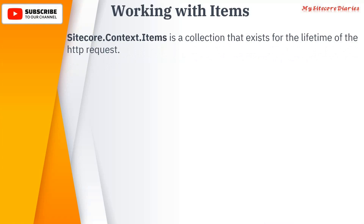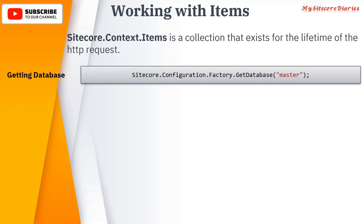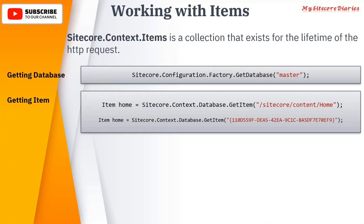We will now see some simple code samples which will be required for any operation on the items. The first thing is to get the database — you have to use Configuration.Factory.GetDatabase and provide the name of the database. It can be 'master' if you want to get information from the master database, or 'web' or 'core'. For getting items, you can retrieve by item path or by the ID of that item.